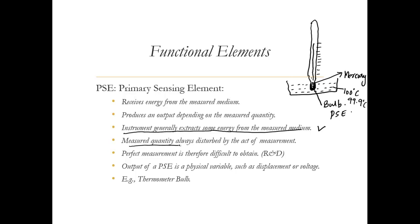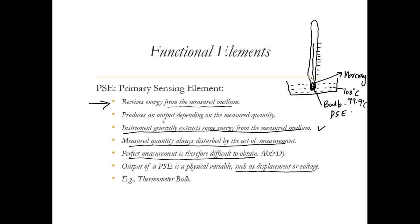Perfect measurement may not always be obtainable. The output is shown as displacement — the displacement of mercury inside the capillary. The primary sensing element varies across instruments, but generally it receives energy from the measured medium; here it is the thermal energy of the fluid. Accordingly, the mercury expands, and that expansion is proportional to the heat received from the medium.